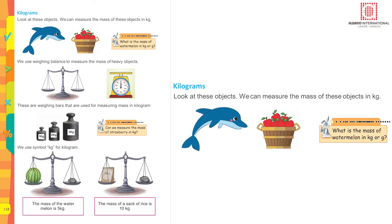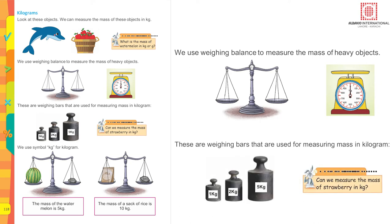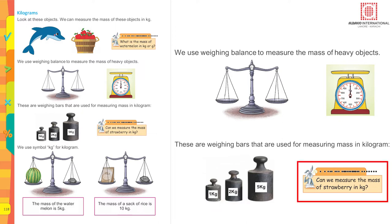Look at these objects — we can measure their mass in kilograms: the weight of a fish, the weight of more than one apple. We use a weighing balance to measure the mass of heavy objects. These are weighing bars used for measuring mass in kilograms: 1 kg, 2 kg, 3 kg.